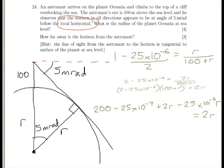Now, straight away, we should be able to see that our 2r here and here cancel, which leaves us, once we've rearranged a little bit, with 200 minus 25 times 10 to the minus 4.